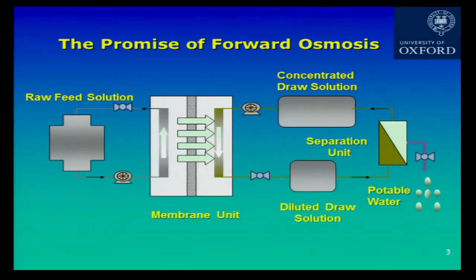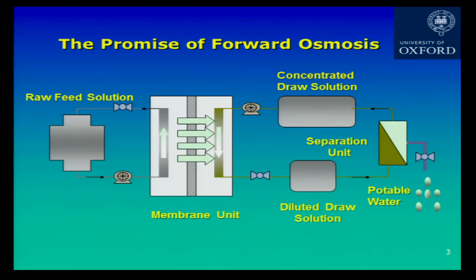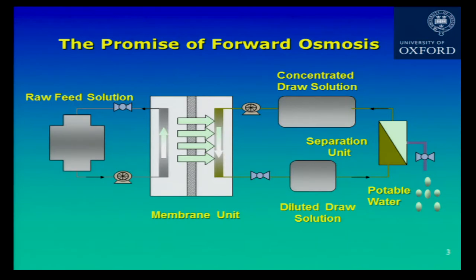This is a typical operation unit. We have a raw feed being circulated against the membrane, and on the other side a draw solution. The water is being drawn across the membrane from the feed into the draw. As the draw moves through, it gets more diluted. I then use a separation unit to recover clean potable water, and I can recycle a concentrated draw solution back into the process. In practice, you'd have a continuous feed coming in, and on the draw side a stream of potable water coming out. So this can be operated as a batch or continuous process.